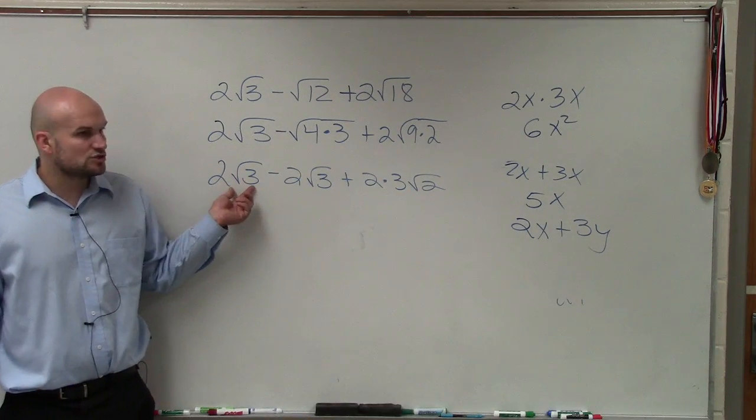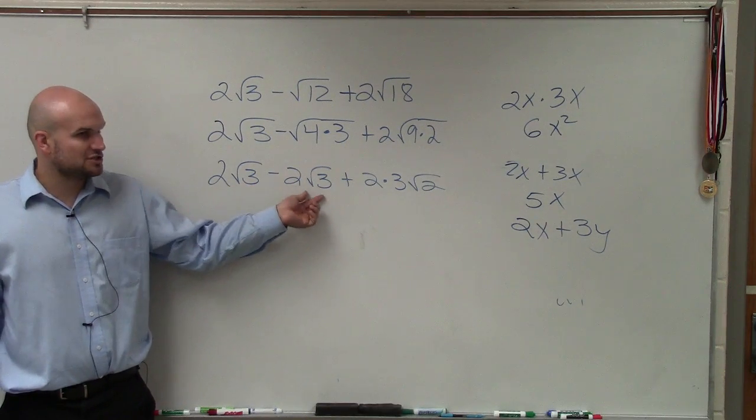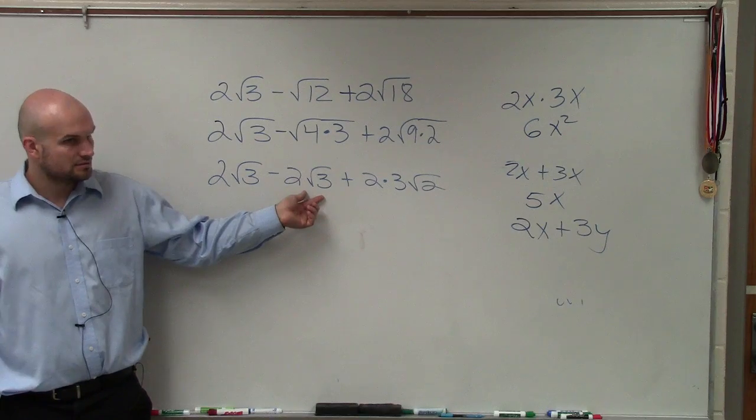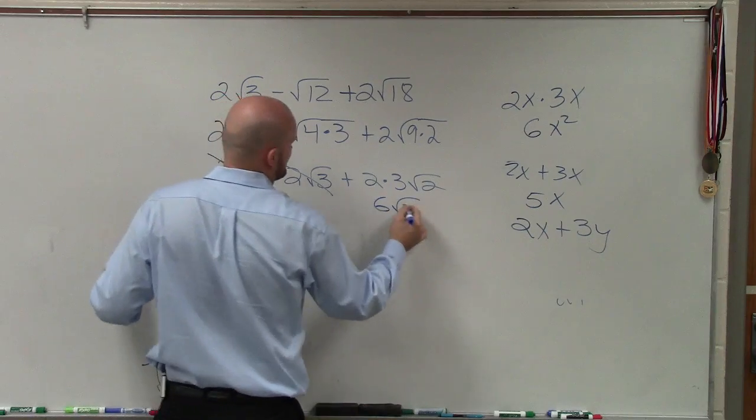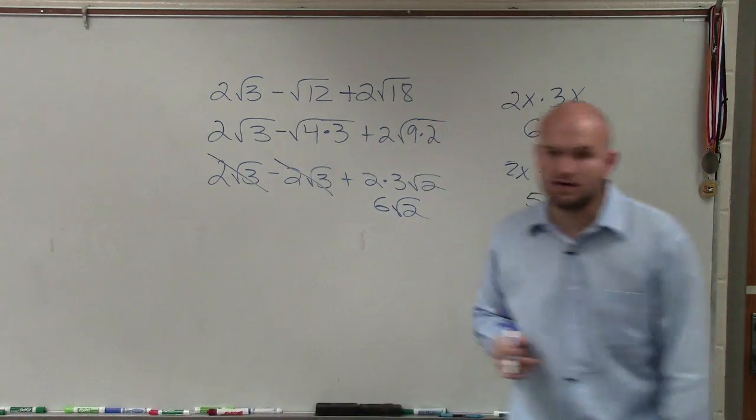So 2√3 minus 2√3 is going to go to 0. 2 times 3 is 6√2, which would be your final answer.